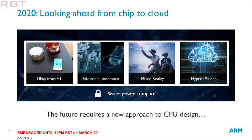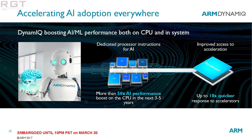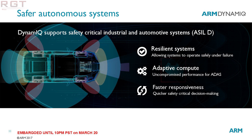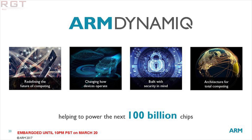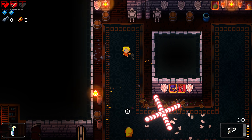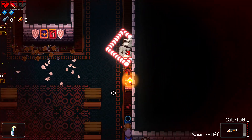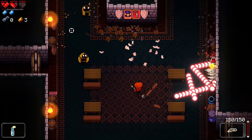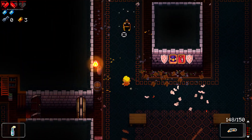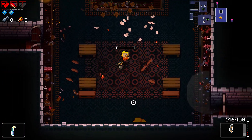ARM are also focusing heavily on artificial intelligence, which isn't new considering most companies are pushing toward AI. However, according to ARM, with DynamIQ — spelled D-Y-N-A-M-I-Q — AI computations will be up to 50 times faster in five years, which is absolutely insane. The purpose behind this is to reduce the time spent between devices and cloud communications — if your handheld device can process more data locally, the cloud doesn't need to do as much work, making things significantly faster.